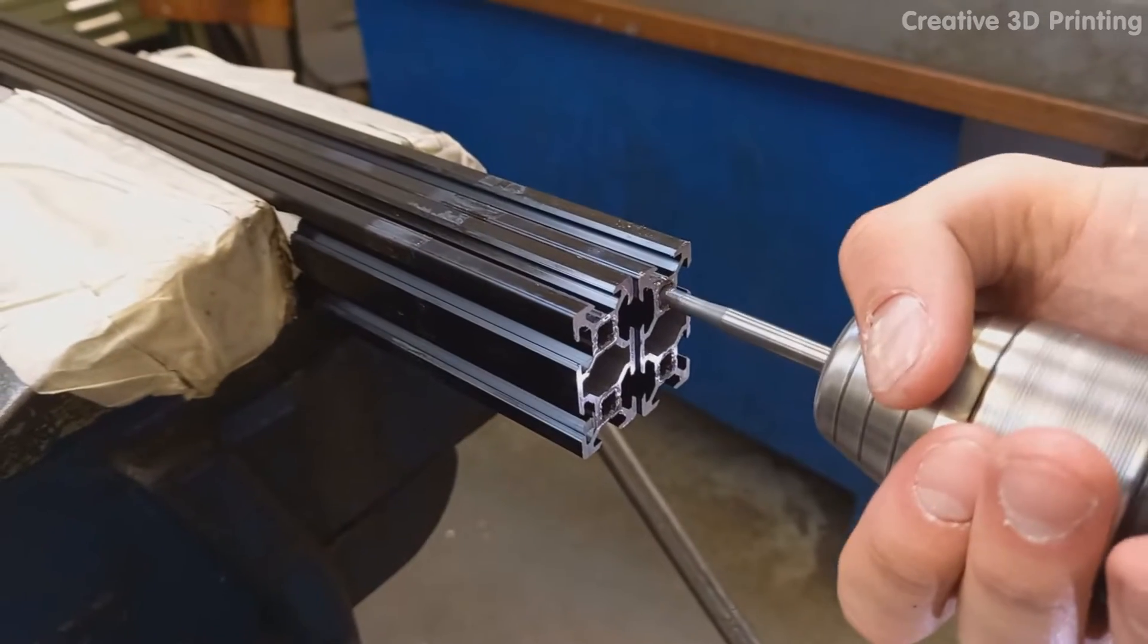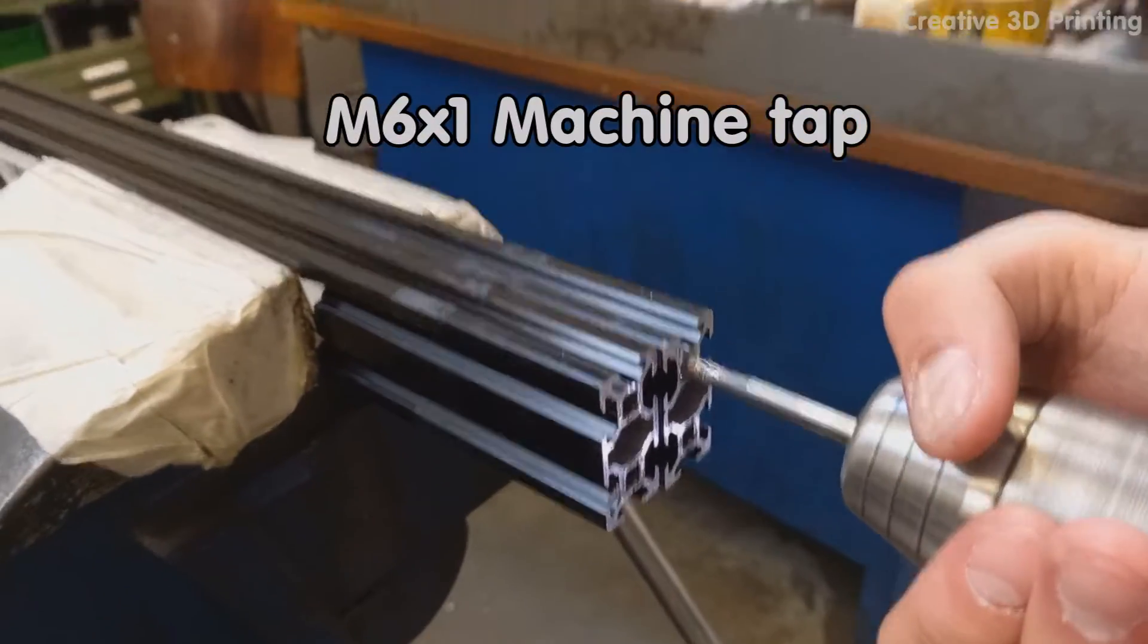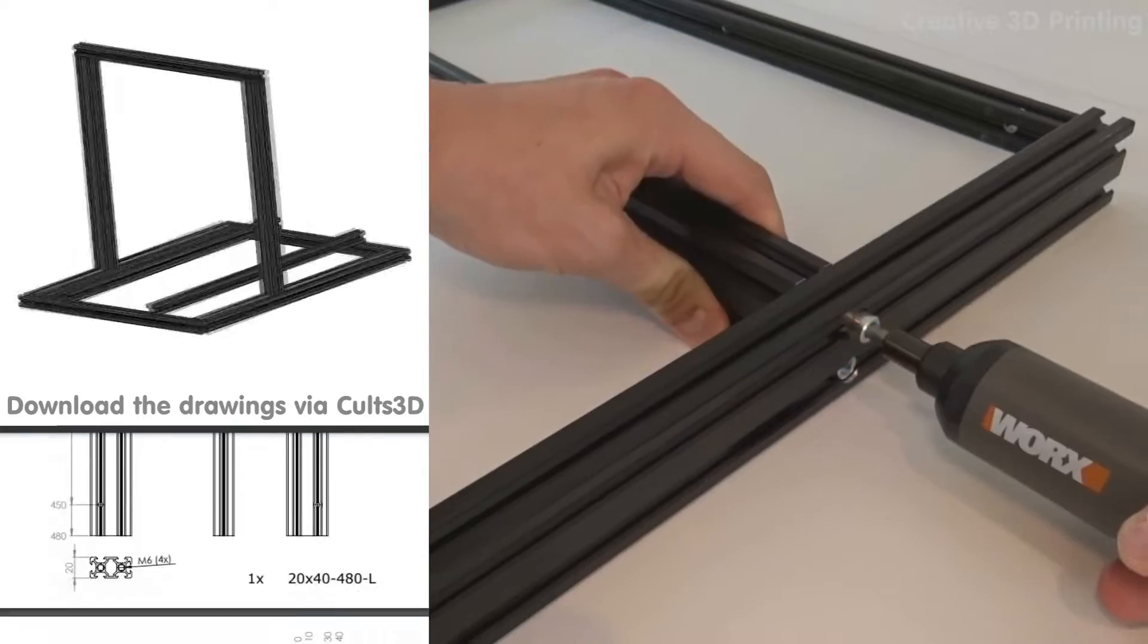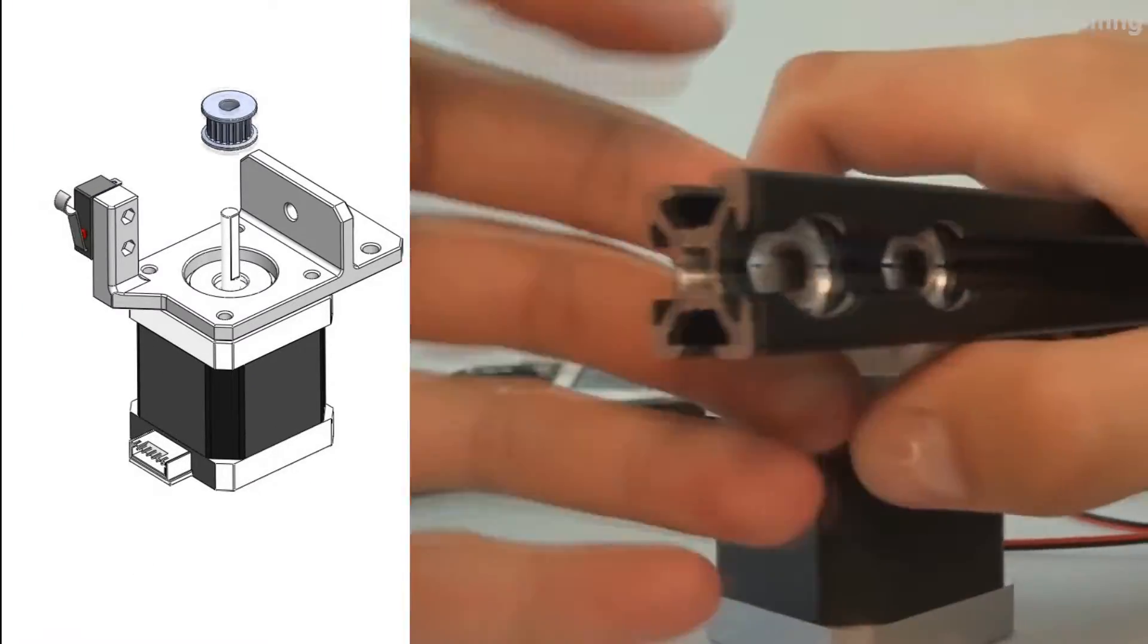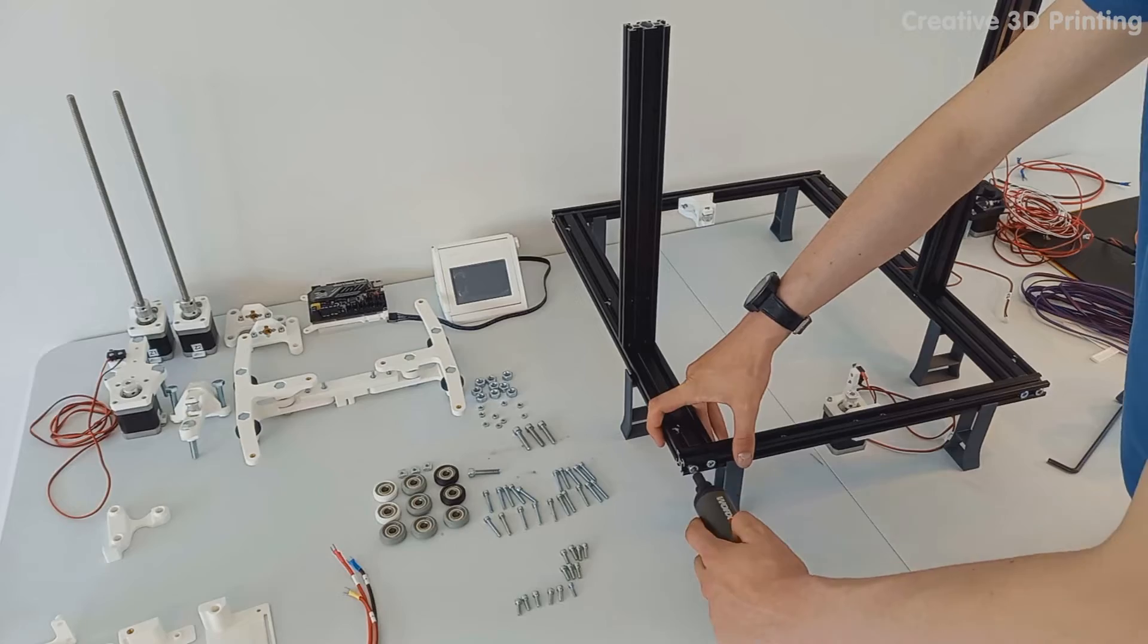And to tap the aluminum profiles, I used an M6 tap. The frame is mounted with M6 hexagon socket screws. I make the holder for the Y stepper motor and mount it to the frame with M4 T-slot nuts.